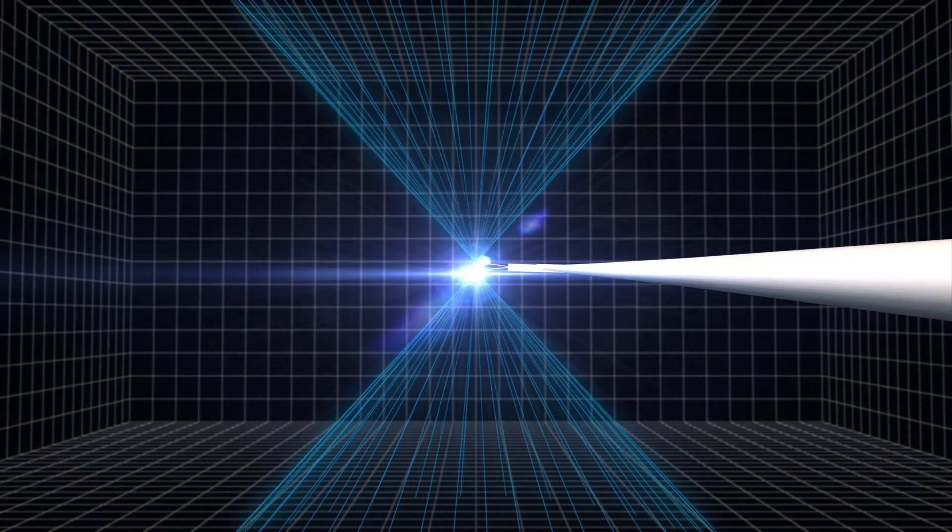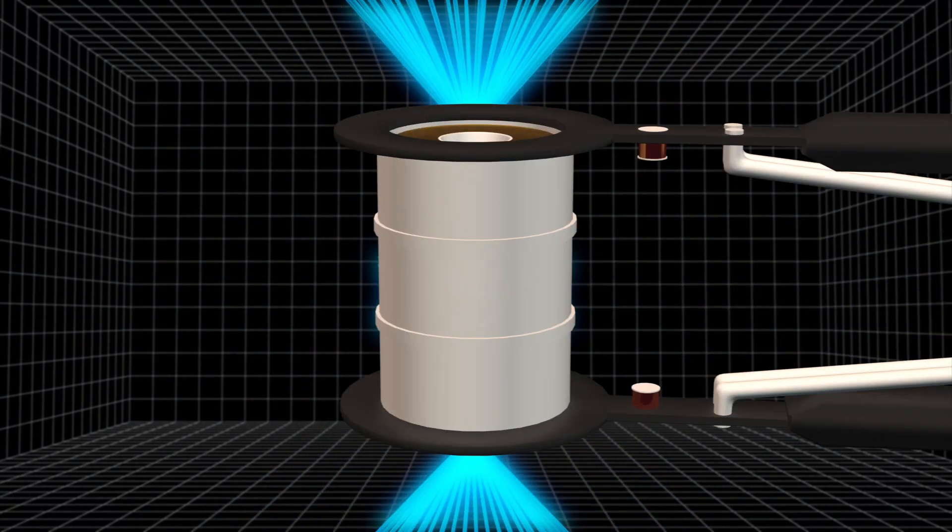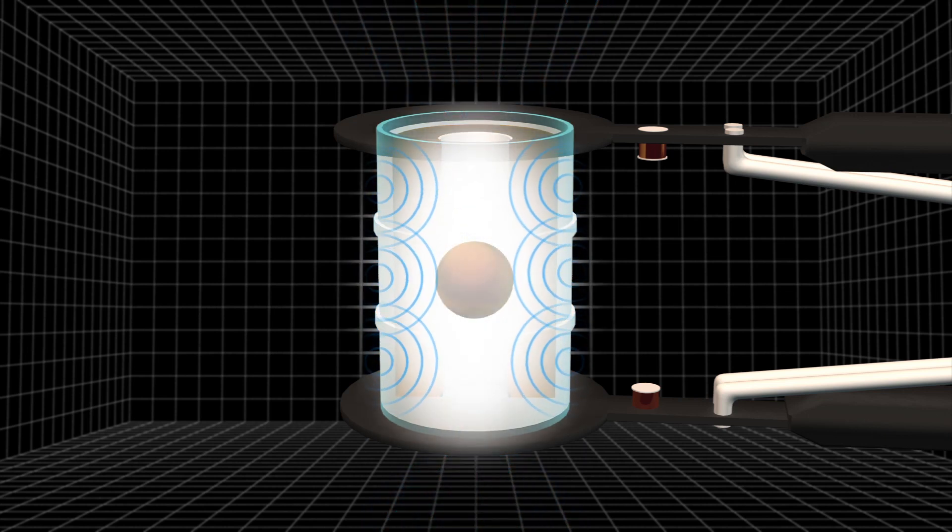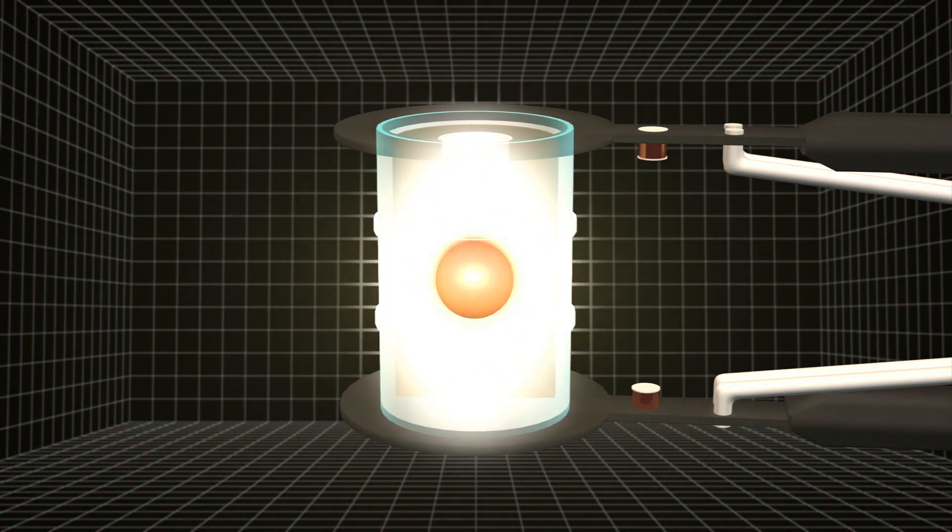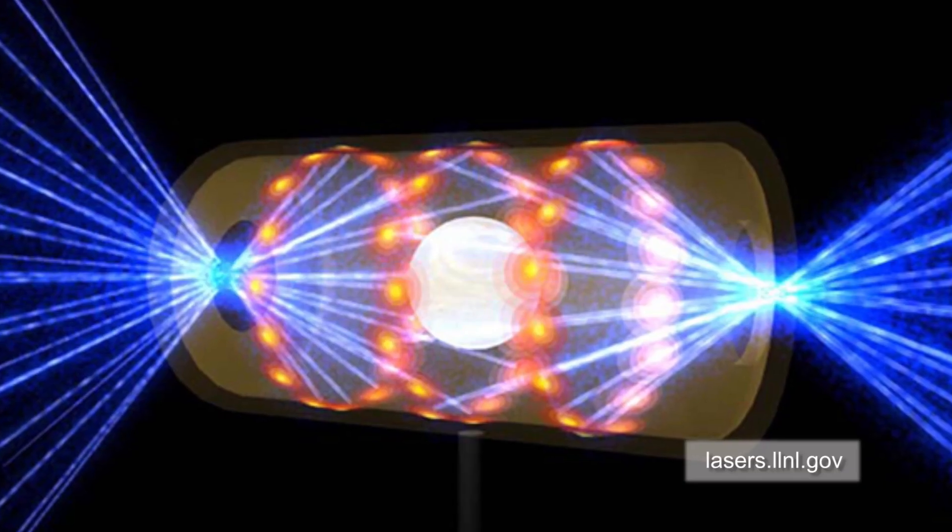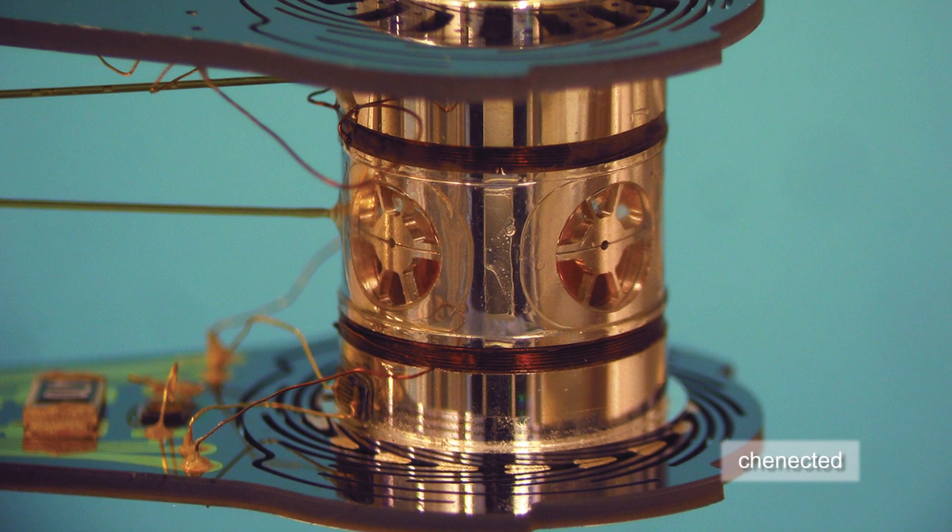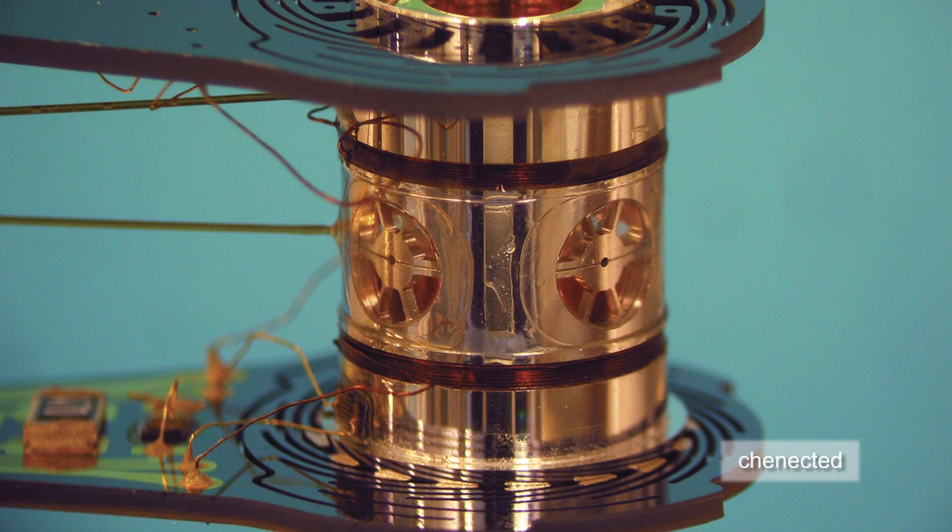The 192 laser beams converge inside the Holraum, generating a bath of X-rays. The X-rays cause the tiny target sphere to implode and ignite a controlled, self-sustaining fusion reaction. The breakthrough means the NIF, one of several projects around the world working towards self-sustaining fusion, is one step closer to achieving its goal.